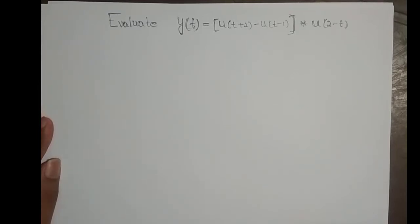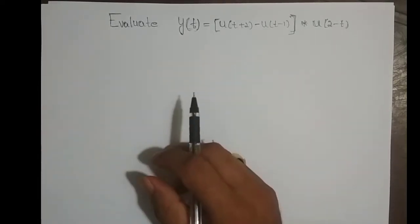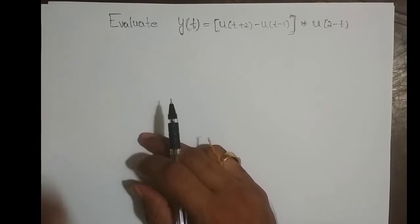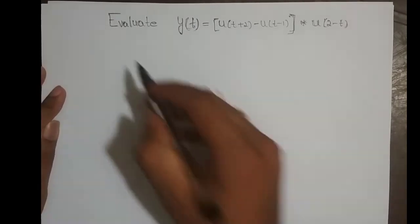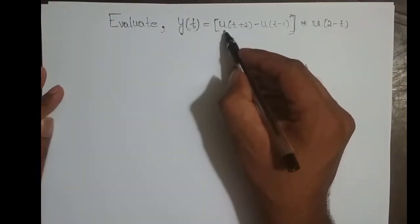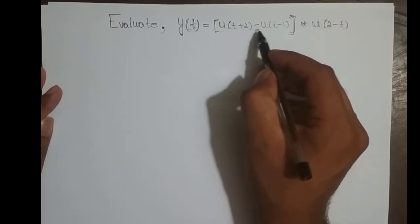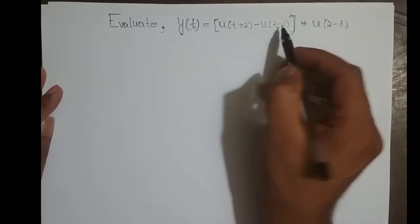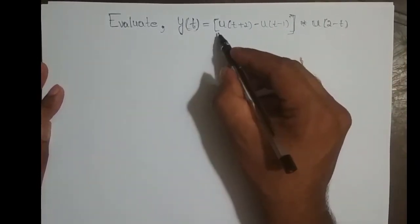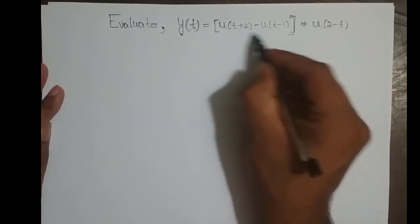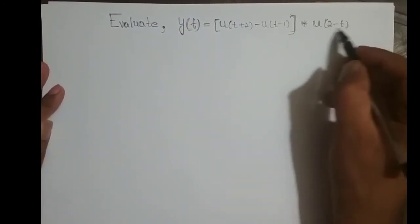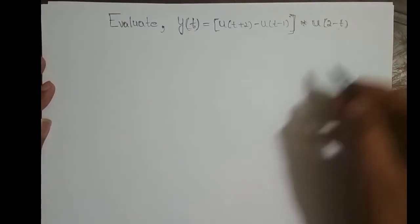Hey guys, this might be the last problem I will take up on convolution integral. The problem is: evaluate y(t) = [u(t+2) - u(t-1)] convolved with u(2-t). As a whole, this first part is one signal x(t), and the second part is another signal h(t).